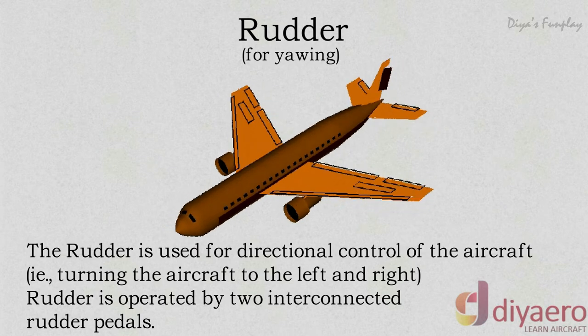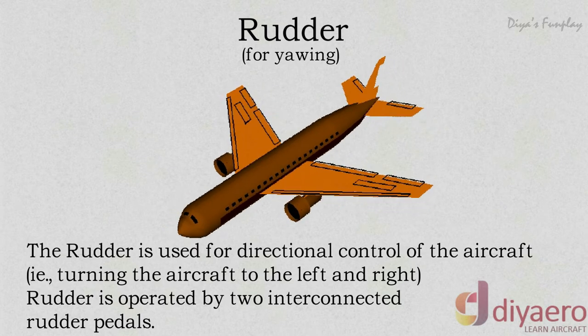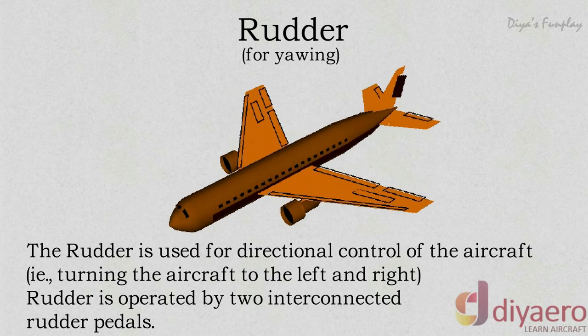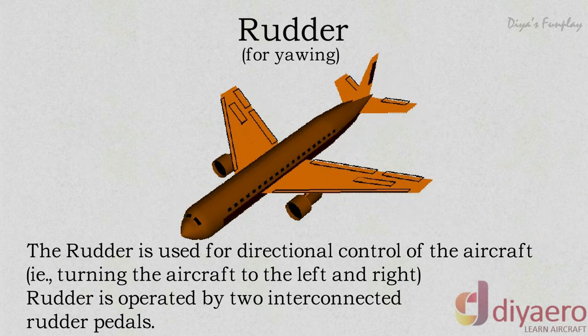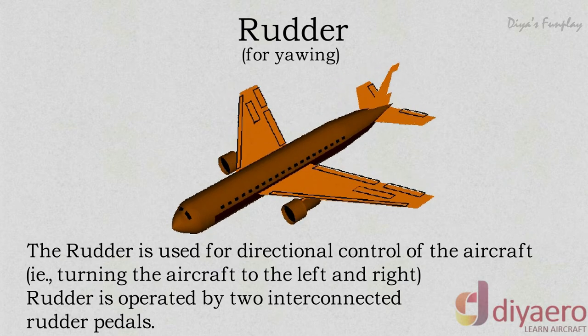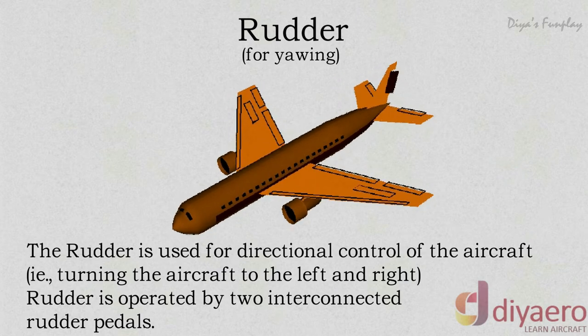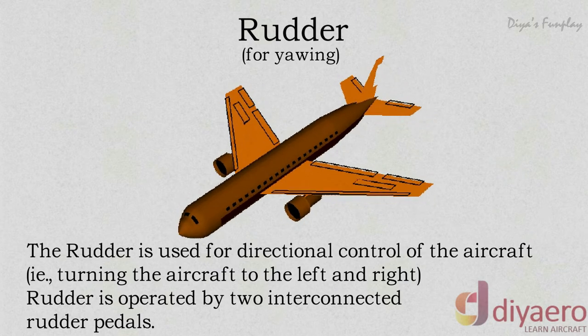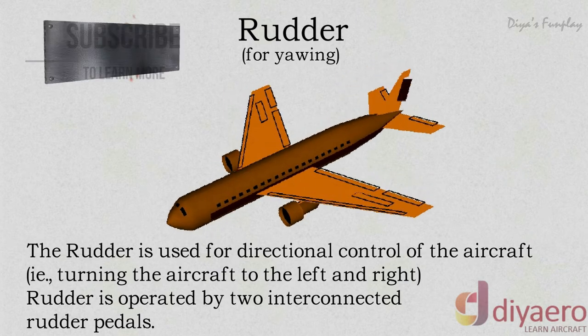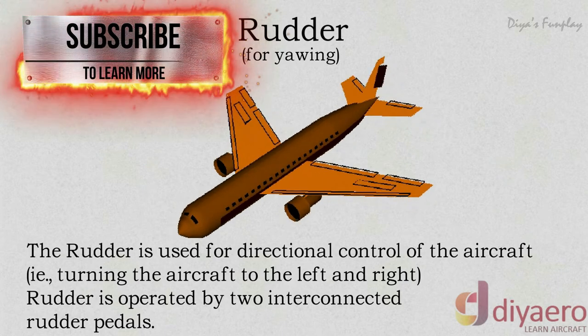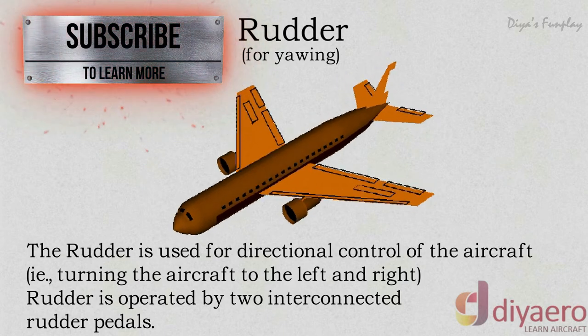The effectiveness of the rudder increases with speed. Therefore, large deflections of the rudder at low speeds and small deflections at high speeds will be required to yaw an airplane.